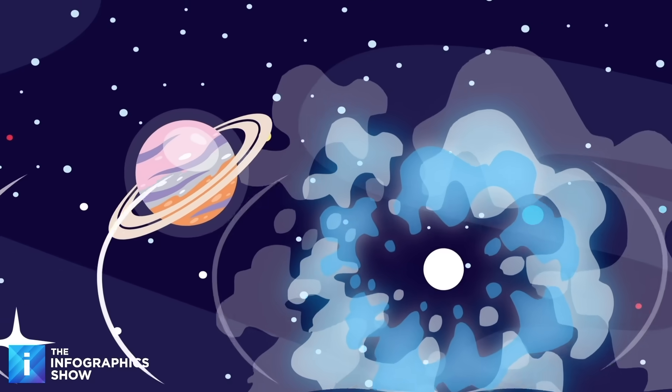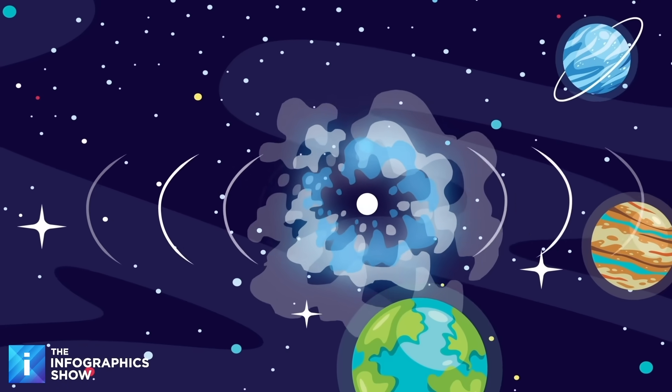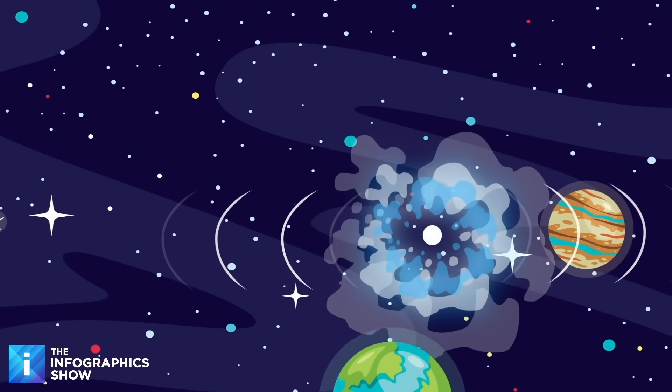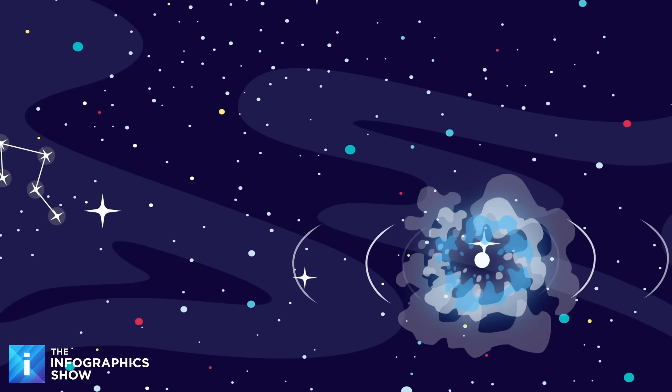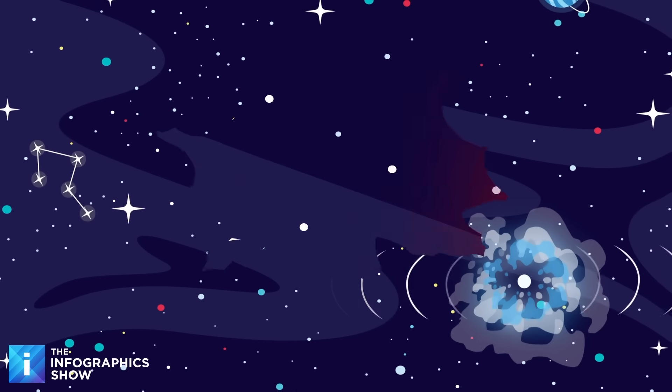According to NASA, the leading theory is that this cosmic menace is a magnetar, a massive neutron star with a magnetic field so intense it could wipe your credit card from orbit.